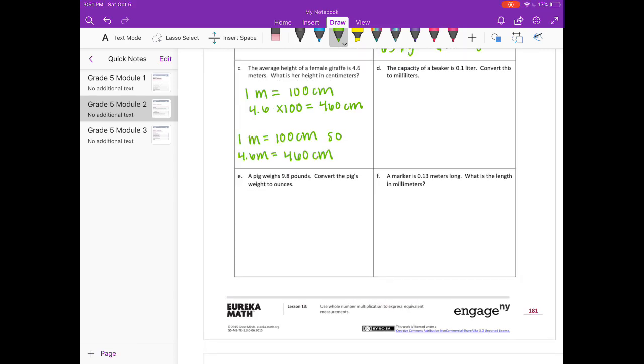D. The capacity of a beaker is 1 tenth liter. Convert this to milliliters. We know that 1 liter is equal to 1,000 milliliters. So if we have 1 tenth liter, we can multiply that by 1,000. We will get 100 milliliters. So our statement could be something like if 1 liter is equal to 1,000 milliliters, then 1 tenth liter is equal to 100 milliliters.